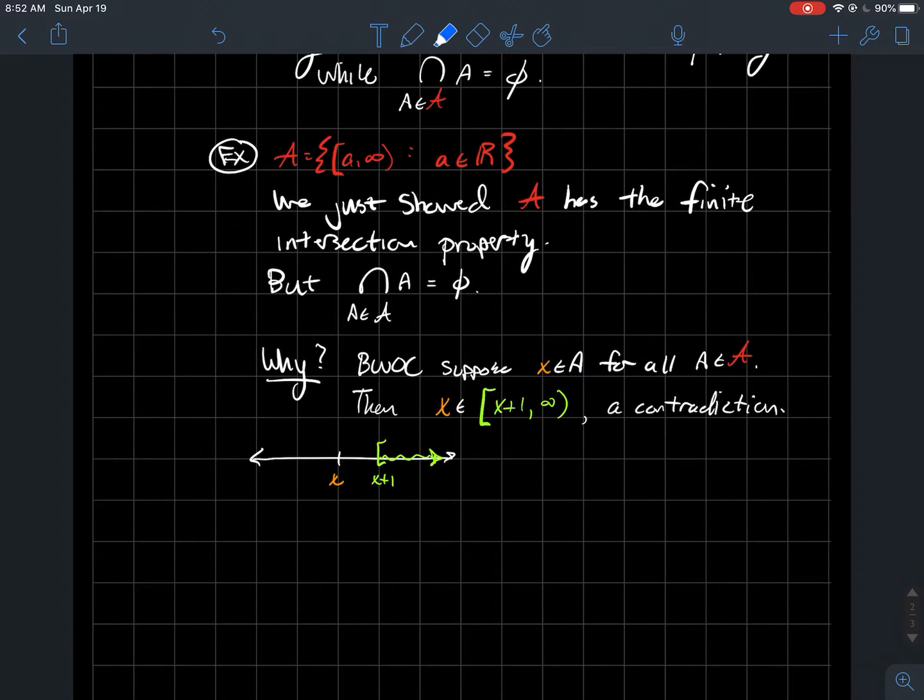That means the real number x has to be in the interval [x+1, ∞), right? This green [x+1, ∞) has this form, therefore it's a member of my collection fancy A. So somehow that orange has to be in the green set, which is impossible. That's a contradiction. Therefore, this intersection has to be empty.